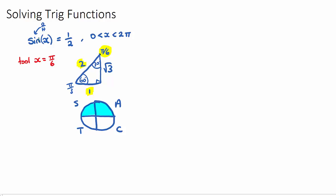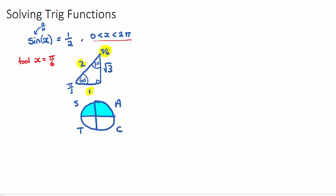Once we know that our trig function — sine — was positive a half, we need to look at the positive sine quadrants. If this was negative a half, we would be looking at the negative sine quadrants, T and C. So our answers within our domain, which is 1 full circle — 0, pi on 2, pi, 3 pi on 2, 2 pi — will be pi on 6 up in either of these two quadrants.